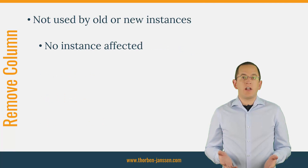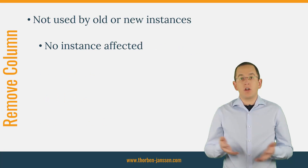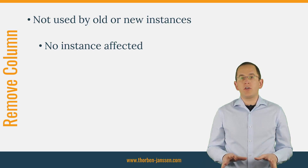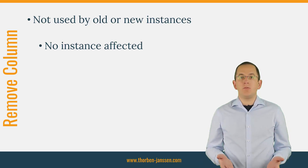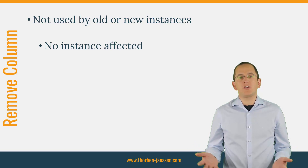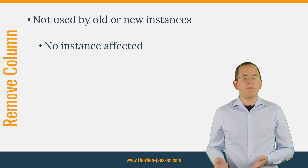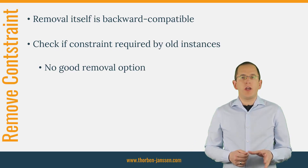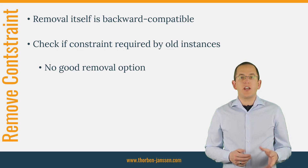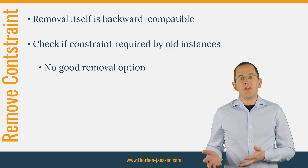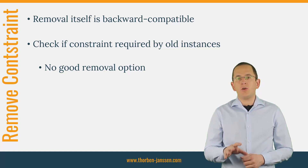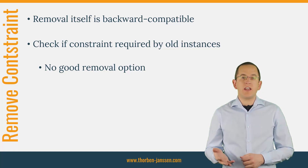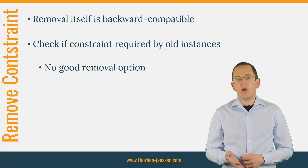Removing a database column that is neither accessed by the old nor the new version of your application is also a backward compatible operation. No application is using that column anymore, so there's also no application that could be affected by its removal. The removal of a constraint is a backward compatible operation. The old version of your application can still write to the database in the same way as it did before.